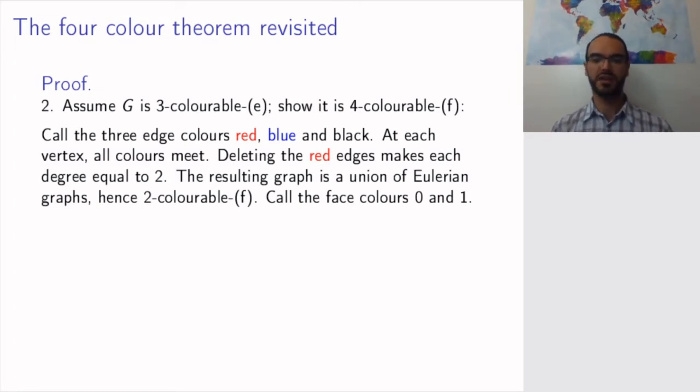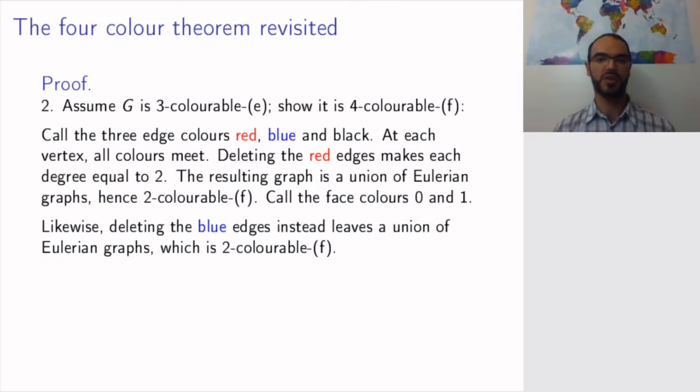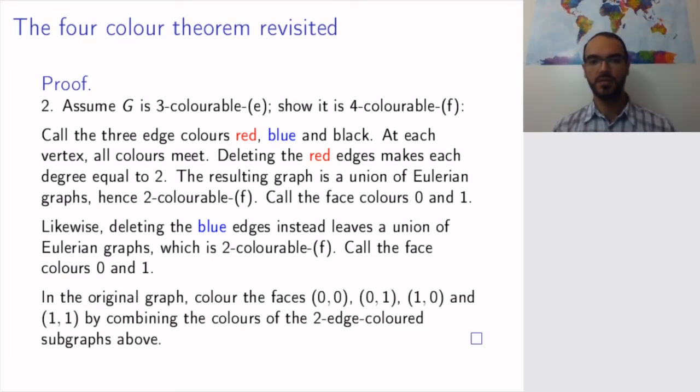But, there is nothing special with the red edges. I can just as well do the same with blue edges. If I delete the blue edges, I will get degree 2 everywhere. So, it's a union of Eulerian graphs. So, again, the faces of this, now different graph, can be colored in two colors, which I also call 0 and 1. And now, I put back the edges.